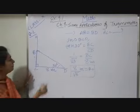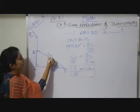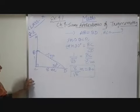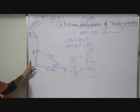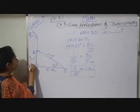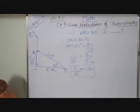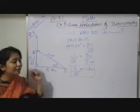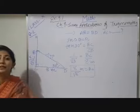To find out the length of BD, BD means what? Your hypotenuse. Hypotenuse means the opposite side you are knowing, that is 8 upon root 3, and the adjacent side you are also knowing. So among sin ratio or cosine ratio, only one ratio you can apply.